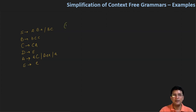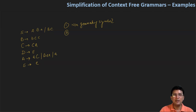So let me write it here. Sabse pehle hum log remove karenge non-generating symbol ko. Non-generating symbol ka meaning hai ki agar koi non-terminal symbol terminal symbol generate karta hai to usko hum generating symbol kahenge, aur agar wo terminal symbol generate nahi kar paata hai to hum usko kahenge ki non-generating symbol hai aur usko hum apne grammar se remove karenge.